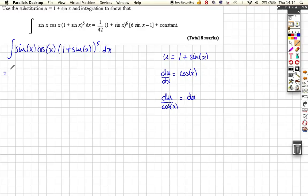Okay, so let's write it again. We're going to get the sine x is this. And then the cos x and this cos x cancels, so we're going to get a du at the end. And then we're going to get a u to the power of 5.